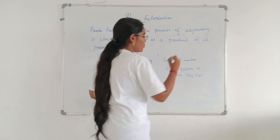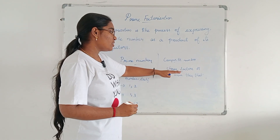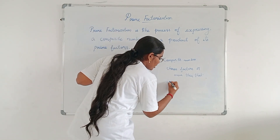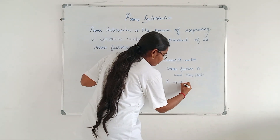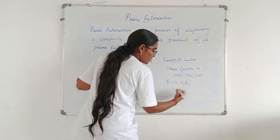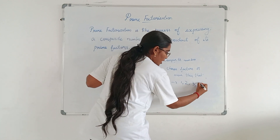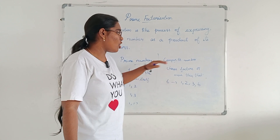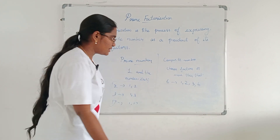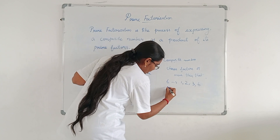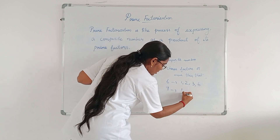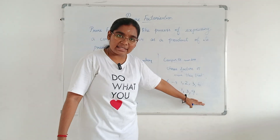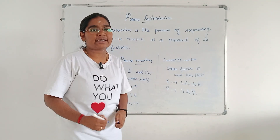Whereas, factors of a composite number will be more than two. For example, six — its factors are one, two, three, and six, so it has four factors. Therefore six is a composite number. Consider another example: nine. Its factors are one, three, and nine — so nine has three factors, making nine a composite number.